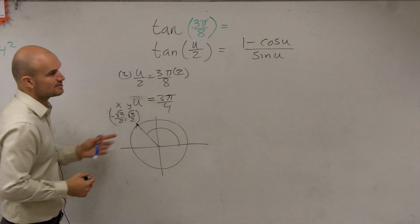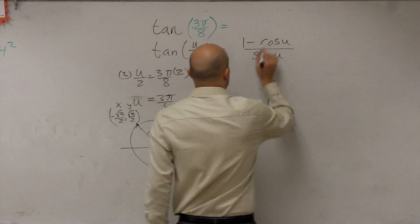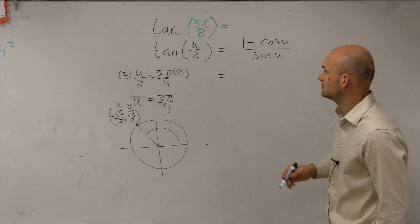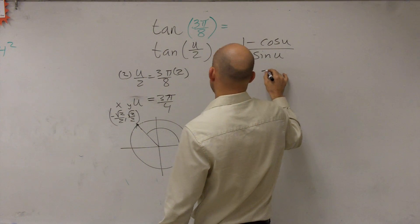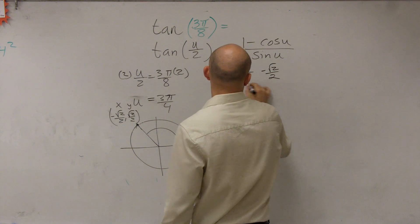So here we have this point right here. So all it's asking us to do is say, well, what's the cosine of u? Negative. So it's negative square root of 2. So you do 1 minus negative square root of 2 over 2. Divide it.